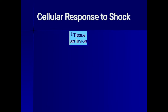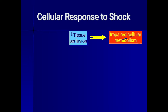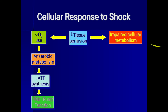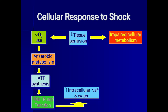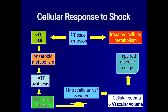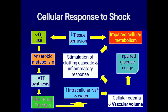At the cellular level, reduced tissue perfusion causes impaired cellular metabolism. There is reduced oxygen use and therefore anaerobic metabolism, reduced ATP synthesis, and reduced sodium pump function, which increases intracellular sodium and water, causing cellular edema and reduction in vascular volume. This also impairs glucose usage and stimulates the clotting cascade and inflammatory response.